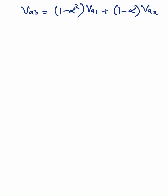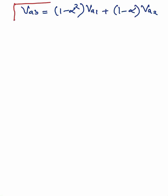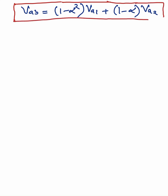So basically we have calculated the line voltages between A and B. Similarly, you can calculate Vbc and Vca. I hope you have learned the basics of how to calculate the symmetrical components of line voltages. Thank you very much — please like and subscribe to my channel, Basic Electrical.